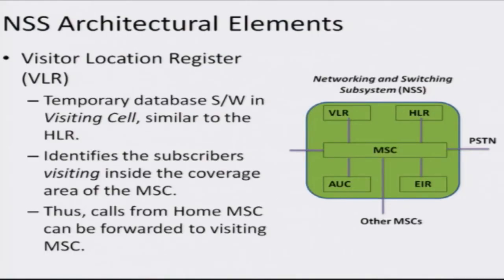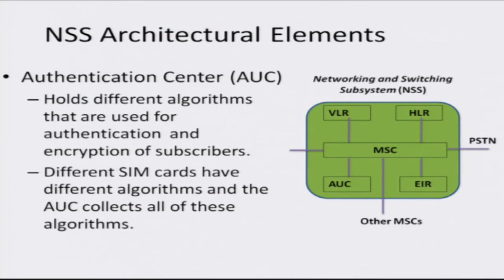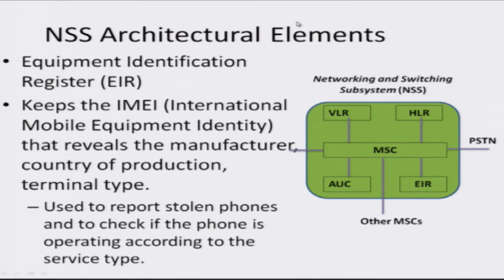The Visitor Location Register stores information about a subscriber when they are not in their home cell but roaming in a different cell, so calls can be appropriately routed to the user wherever they are visiting. The Authentication Center holds all the key encryption and authentication algorithms because information transmitted over the air must be secure and cannot be eavesdropped. The Equipment Identification Register stores the IMEI — International Mobile Equipment Identity — carrying information about the type of device, supported services, and can flag stolen devices.